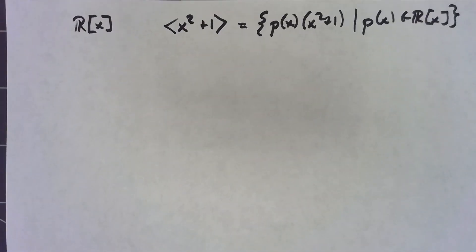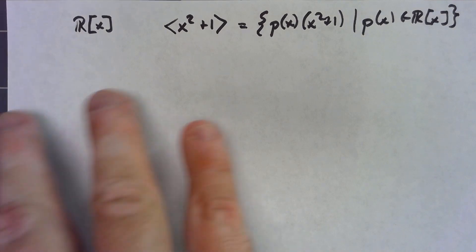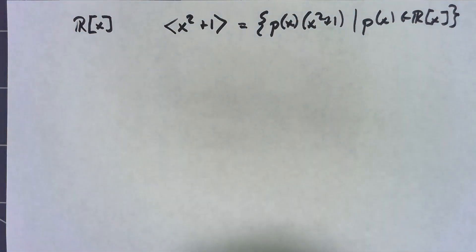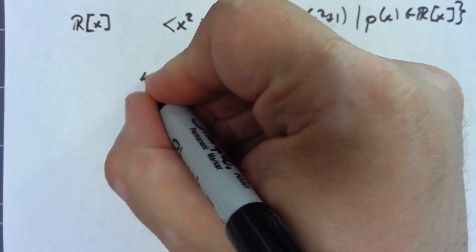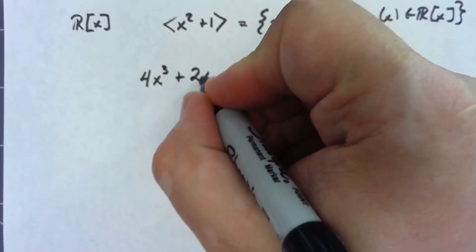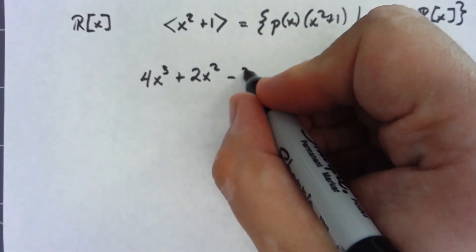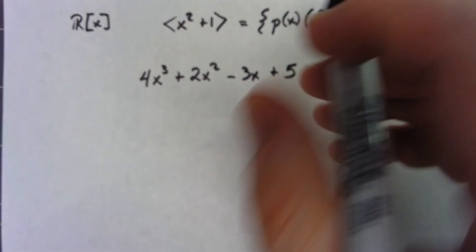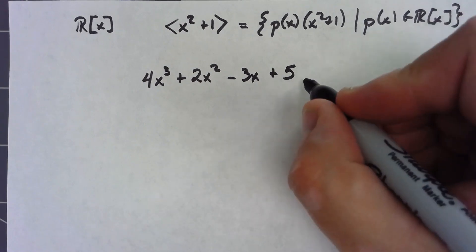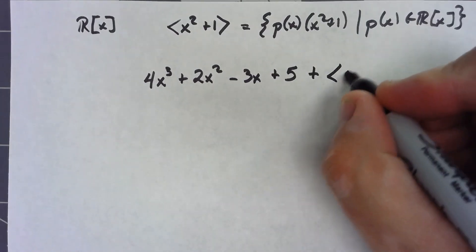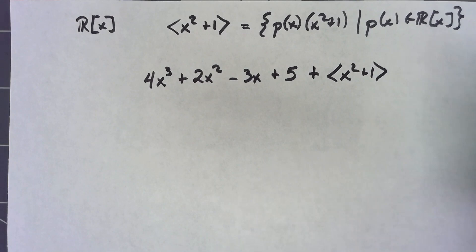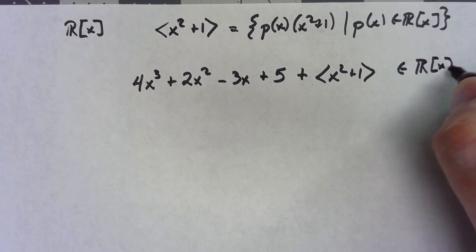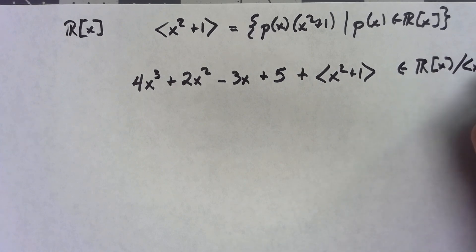Before we get into how to do math in here, let's actually consider something. Let's say I had a polynomial something like 4x cubed plus 2x squared minus 3x plus 5, and let's take that plus the ideal generated by x squared plus 1, to get an element of R[x] mod the ideal generated by x squared plus 1.